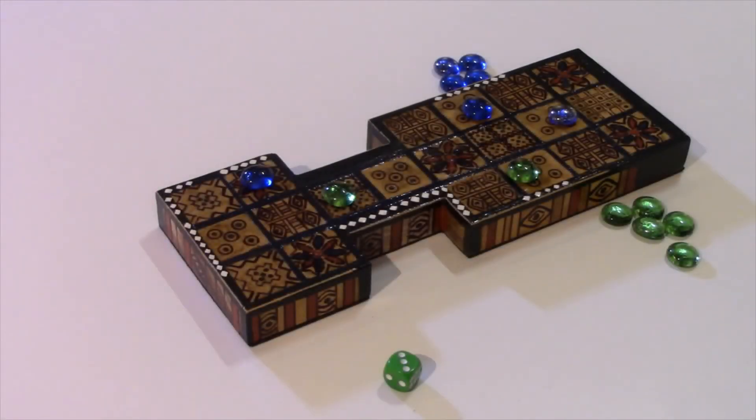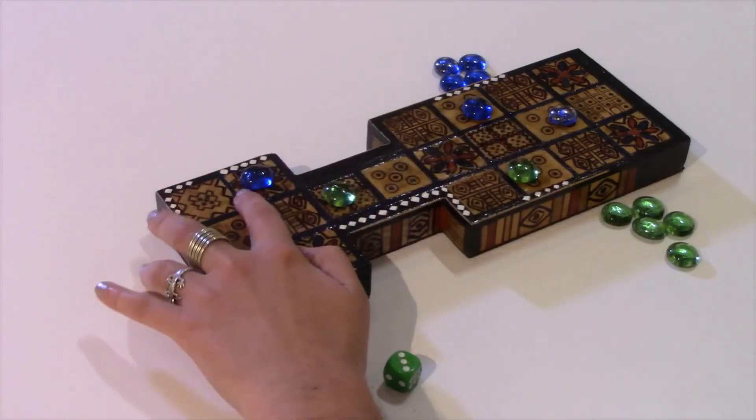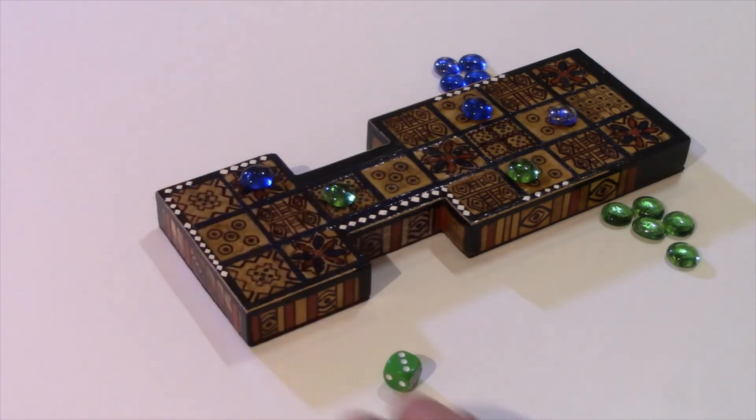The game continues back and forth like this until one player gets to the end of the board. When a player lands on the final rosetta tile on their pathway, they must roll a 1 to be able to get their game piece off the board.